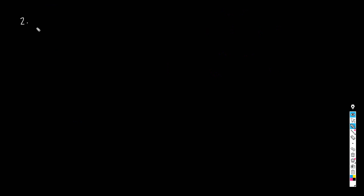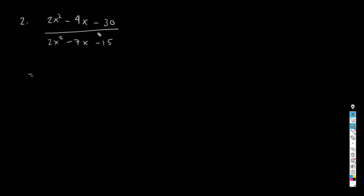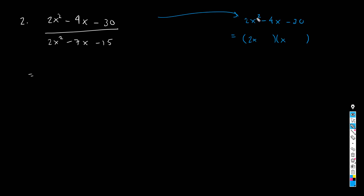Let's try example two: (2x²-4x-30) over (2x²-7x-15). First, let me attempt the factorizations of both numerator and denominator. I take the numerator separately and try to factorize it — remember, factorizations are not always possible, and when that happens we call the polynomial prime.